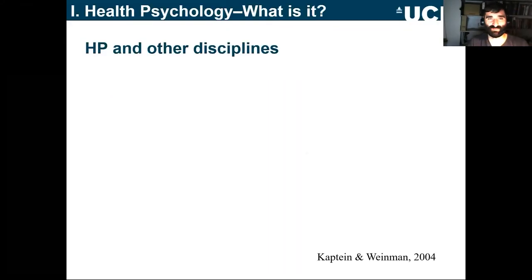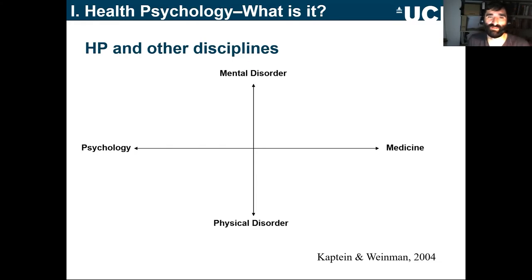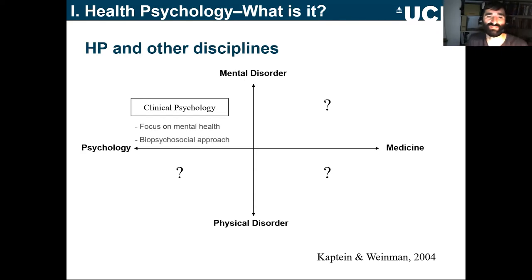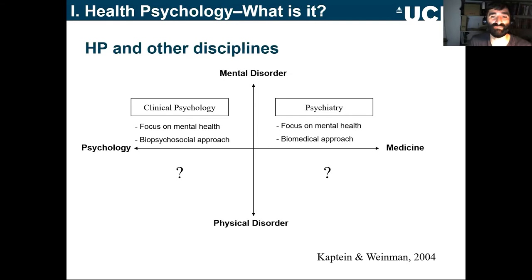The first question you may ask yourself is how does health psychology relate to other disciplines. If you have a grid where we go from left to right from disciplines with a more psychological to more medical focus, and from top to bottom ordering disciplines from mental to physical disorders, in the top left-hand corner we have clinical psychology, which focuses on mental health and takes a biopsychosocial approach to treatment. On the right-hand side, a more medical approach is psychiatry, which focuses on mental health but takes a biomedical approach.